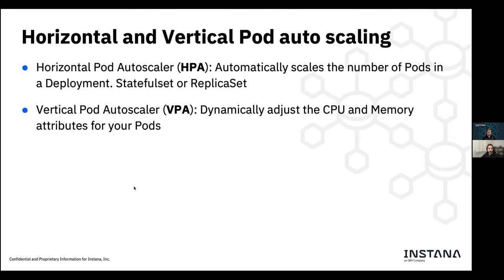I also want to talk about horizontal and vertical pod autoscaling, focusing on pods because that is what runs in your cluster. There is a way to automatically scale your containers in Kubernetes called HPA — Horizontal Pod Autoscaler. You can set up a query that tells Kubernetes the threshold at which it will start spinning up or down more replicas of a deployed container. This is not possible for all application controllers, but you can do it for Deployments, StatefulSets, or ReplicaSets, for example.